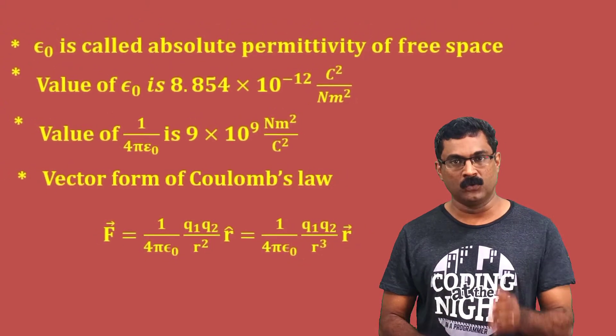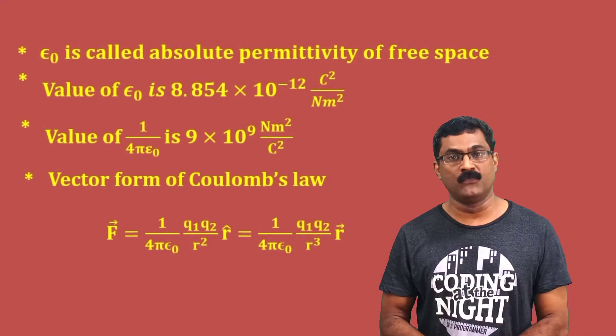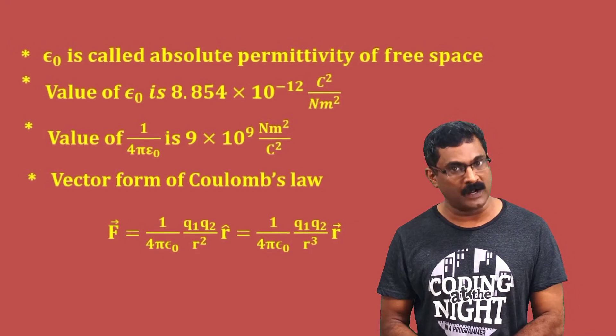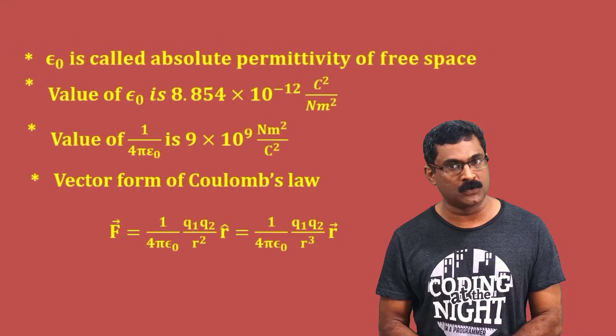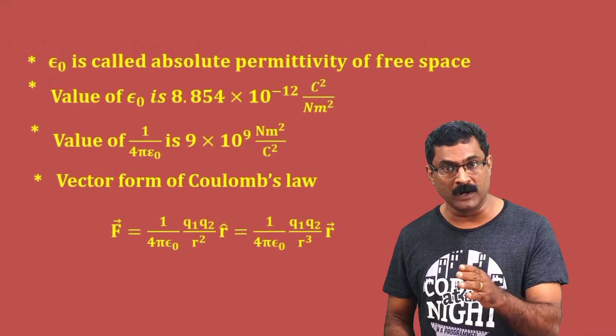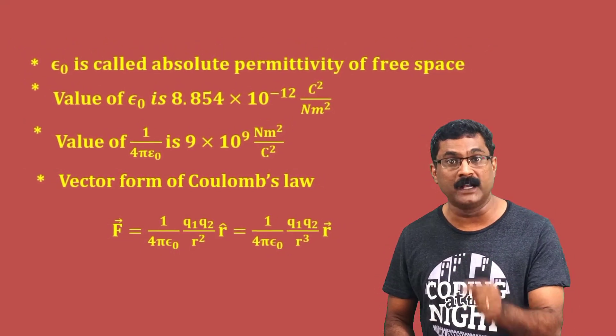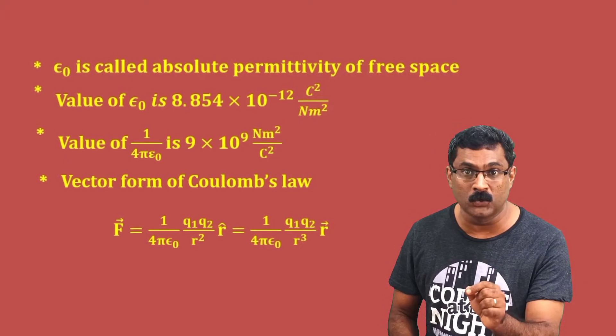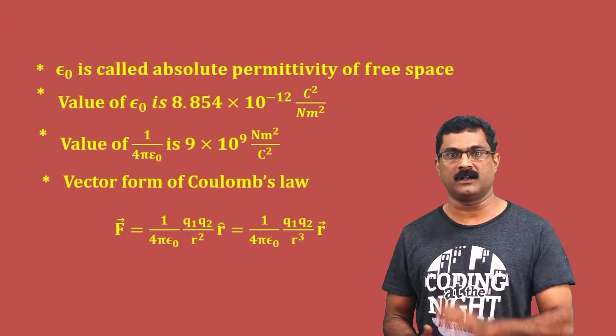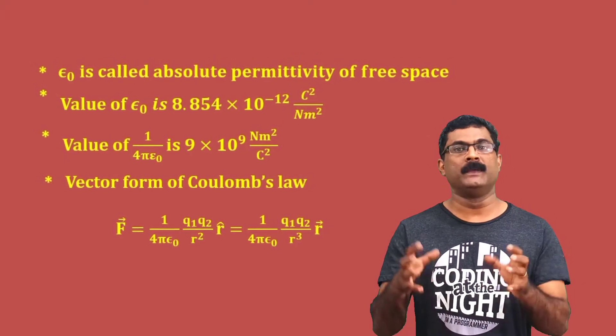You can also write the equation as F vector equals 1 by 4π epsilon₀ q1 q2 divided by r cube into vector r.